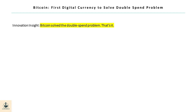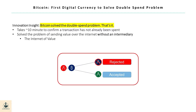Before moving forward, it is important to state that Bitcoin's main innovation was solving the double spend problem. Though there are a number of features to the technology, it really comes down to this single issue. Bitcoin's system takes approximately 10 minutes to confirm a transaction to ensure it hasn't been spent previously. This solves the problem of transferring value over the internet without an intermediary — Bitcoin's protocol operates in a fully decentralized manner, unlike DigiCash's approach that involved using banks as a centralized intermediary.